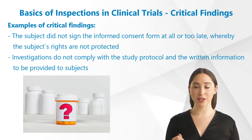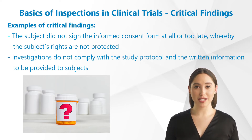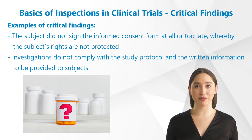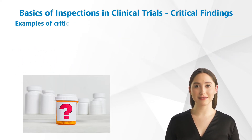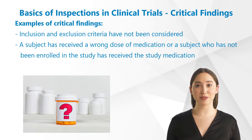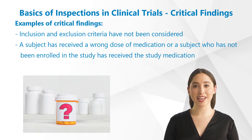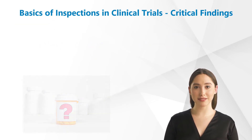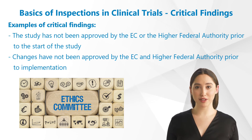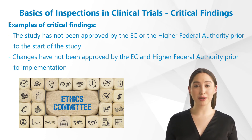Some examples of critical findings are: the subject did not sign the informed consent form at all or too late, whereby the subject's rights are not protected; investigations do not comply with the study protocol and the written information to be provided to subjects; inclusion and exclusion criteria have not been considered; a subject has received a wrong dose of medication, or a subject who has not been enrolled in the study has received the study medication. These deficiencies would be classified as critical findings because they have already affected the quality of study data or the safety of subjects.